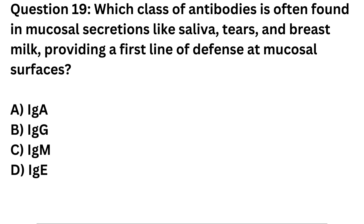Question 19. Which class of antibodies is often found in mucosal secretions like saliva, tears, and breast milk, providing a first line of defense at mucosal surfaces? A. IgA. B. IgG. C. IgM. D. IgA.